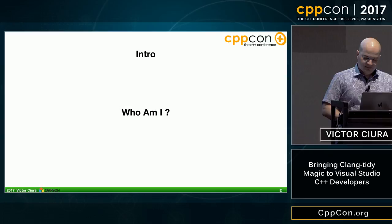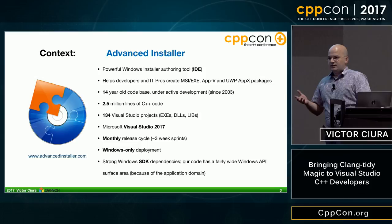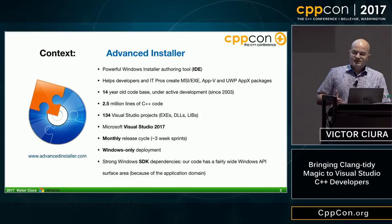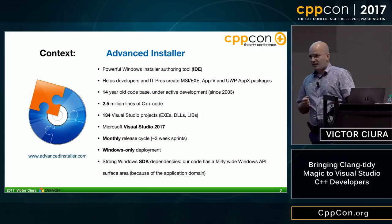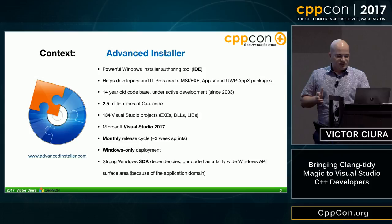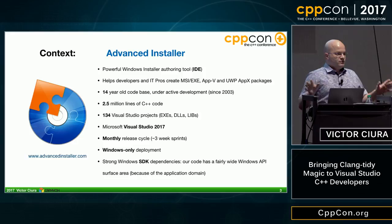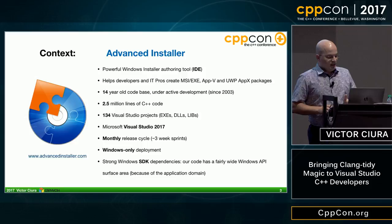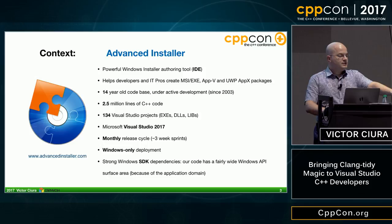To give you a bit of context about the project I work on: Advanced Installer is an IDE, a Windows Installer authoring tool that helps developers and IT pros create MSI, EXE, AppV packages, and APPX packages. It's a 14-year-old codebase under active development, about two and a half million lines of C++ code, 130 Visual Studio projects including executables, DLLs, and static libs. We build everything with Visual Studio 2017, do about a monthly release cycle on three-week sprints, Windows-only deployment with strong Windows SDK dependencies.